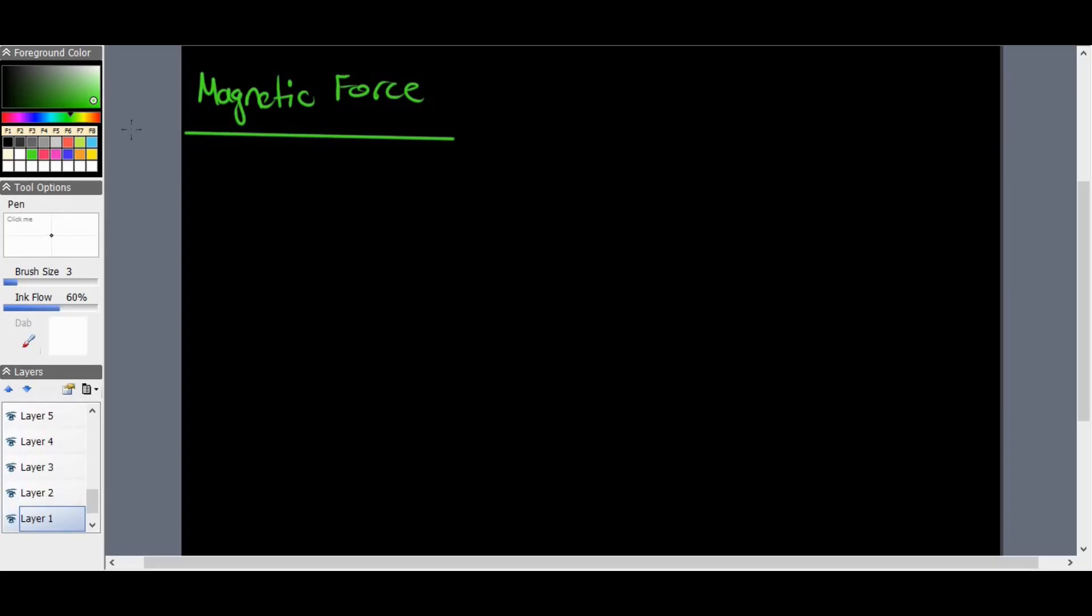We are now moving on to another force called magnetic force between two magnets. A second field force - we looked at the first field force last week, which was gravitational force. Now we're looking at magnetic force, and this takes place between two objects that are not touching. It's a non-contact force.